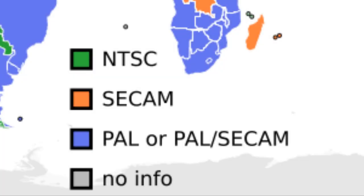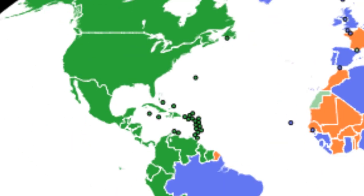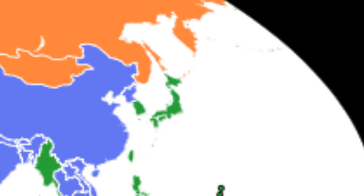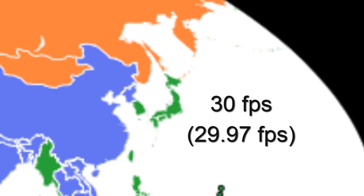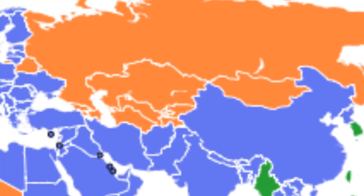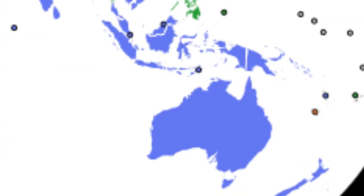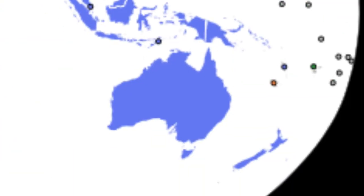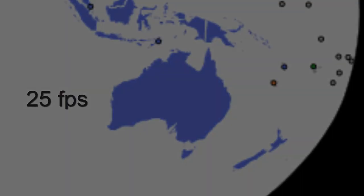Now the main point here is that NTSC, in places such as the US and Japan, is natively 30 frames — well, 29.97 frames per second — and PAL, in places such as Europe and Australia, is natively 25 frames per second.